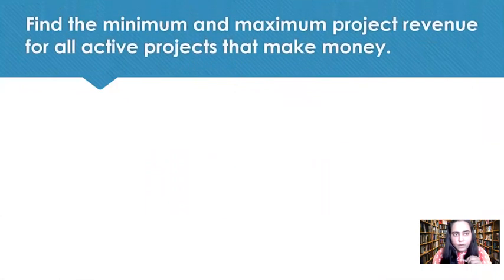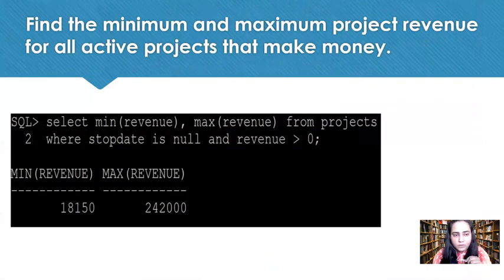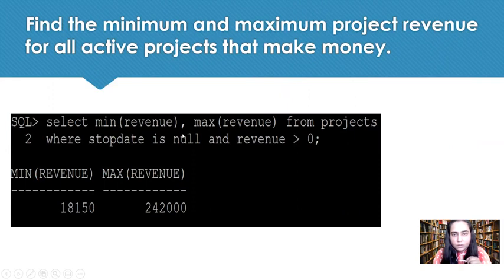The next query is: find the minimum and maximum project revenue for all active projects that make money. This can be written as: SELECT MIN(revenue), MAX(revenue) FROM projects. It also says that projects should be active projects.